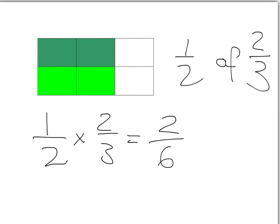In other words, one-half of two-thirds gave me two-sixths. We can see easily how to get that answer. One times two is two and two times three is six. So multiplying fractions is very easy. You just multiply the numerators together and multiply the denominators together.